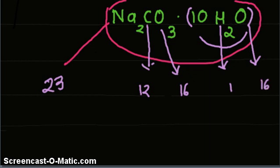Now let us multiply these atomic masses by the number of atoms present. There are two sodium atoms, so multiplied by 2. Then there is one carbon, it remains as it is. Oxygen are 3, so multiplied by 3. In water, hydrogen atoms 2 and oxygen 1.